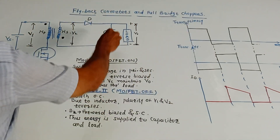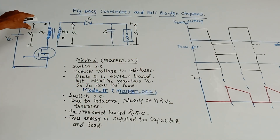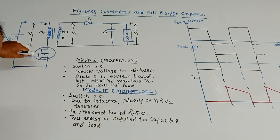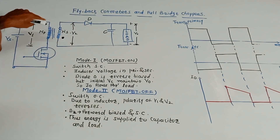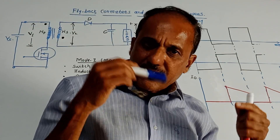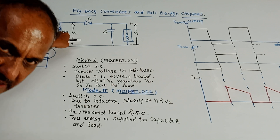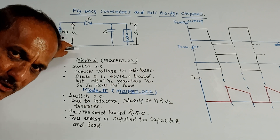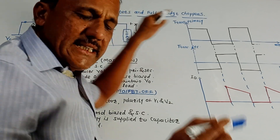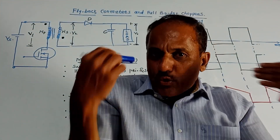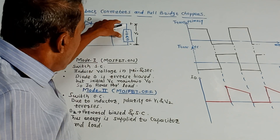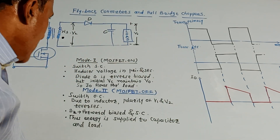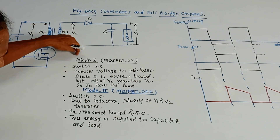This is the diagram of the flyback converter. VS is the supply voltage connected at the input side. There is a MOSFET acting as a switch, and a transformer where Np indicates the number of primary turns and Ns indicates the number of secondary turns. V1 is the voltage at the primary of the transformer, V2 is the voltage at the secondary. D is the diode, C is a large capacitor used for storage, and V0 is the output voltage across the load.